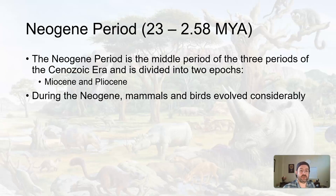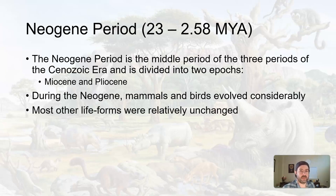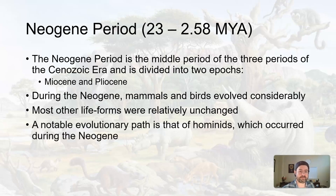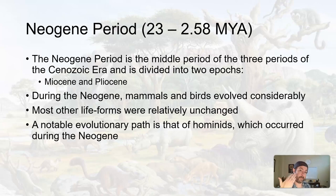Mammals and birds evolved considerably. Most other life forms — reptiles, amphibians, fish — remained relatively unchanged, kind of doing their thing. But with new niches and new ecosystems, mammals and birds were really thriving. Obviously, a notable evolutionary path starting during the Neogene was that of the hominids, which eventually led to humans.